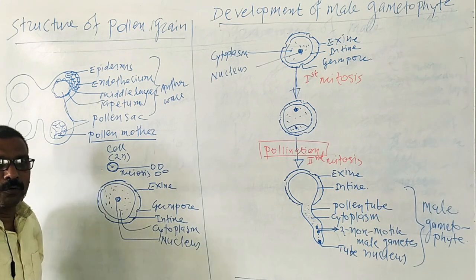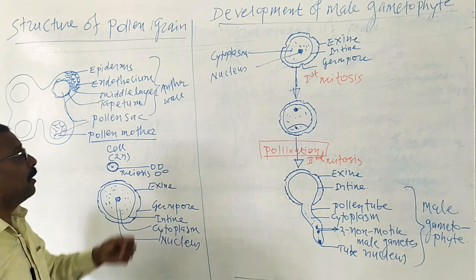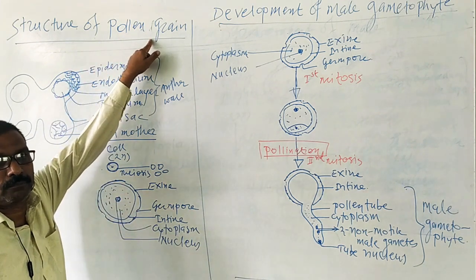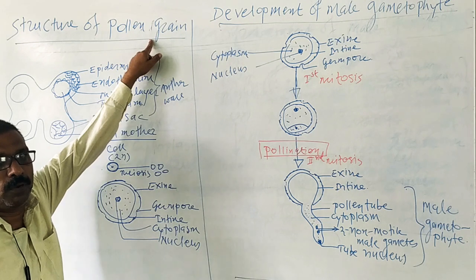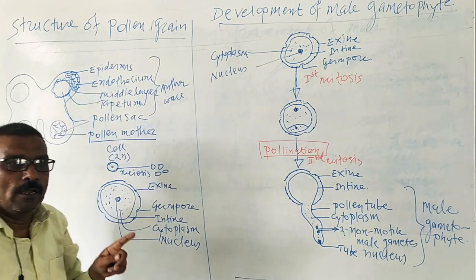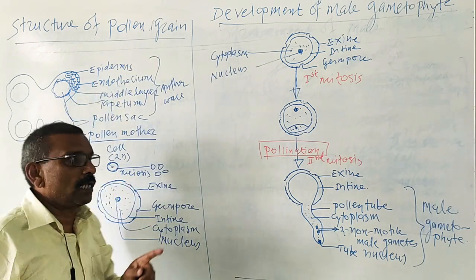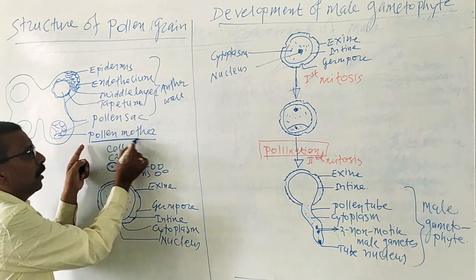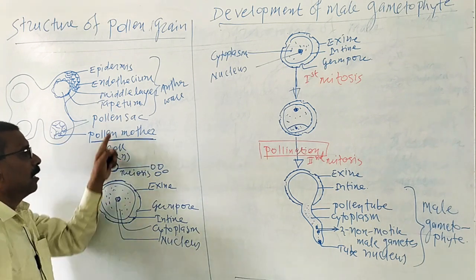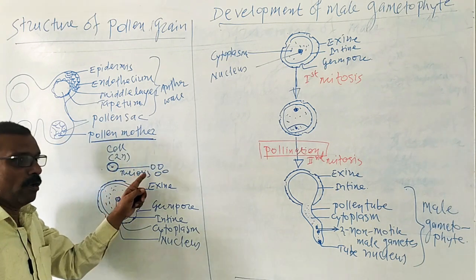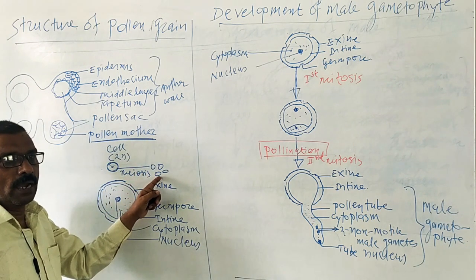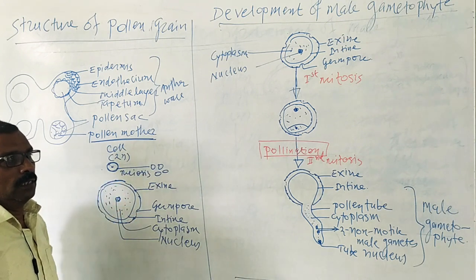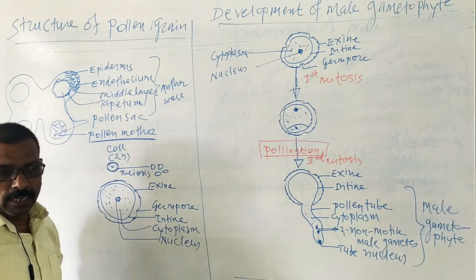Today we are going to study the structure of the pollen grain. Pollen grains are produced in the pollen sac from pollen mother cells by meiosis cell division.